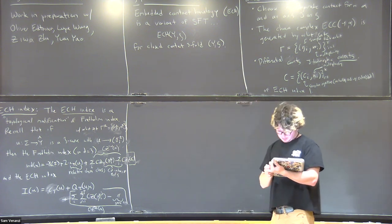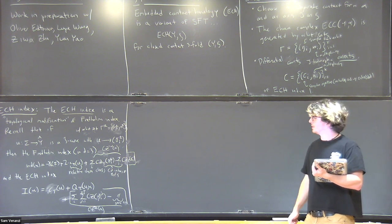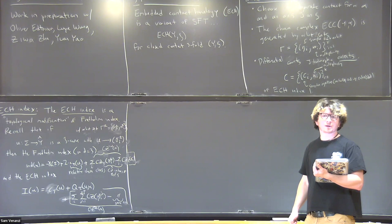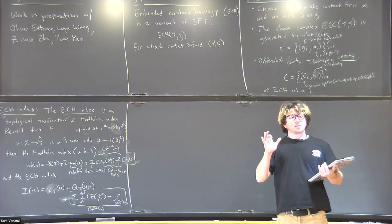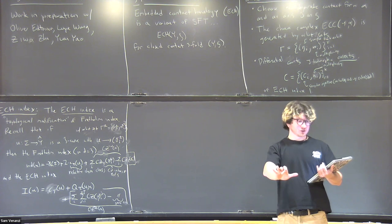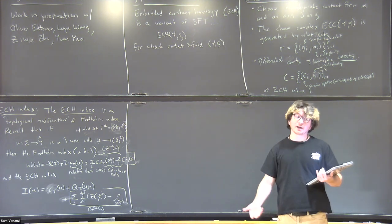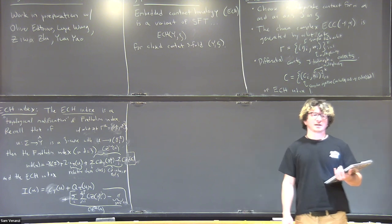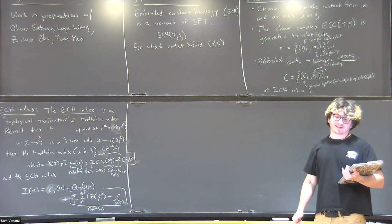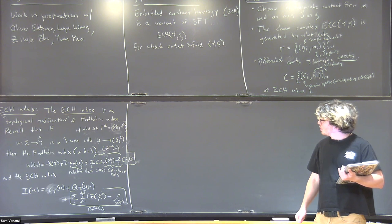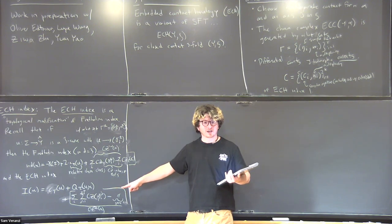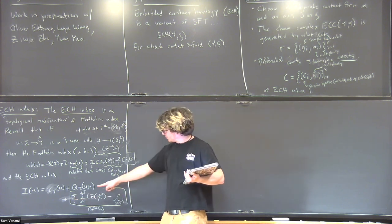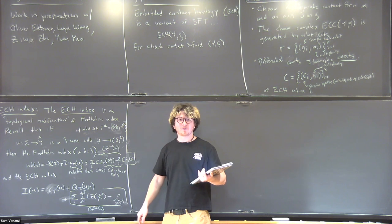For example, if you had two different surfaces mapped to the same image in M—say two different surfaces that were branched covers of the same degree of some initial simple curve—they would have the same ECH index but not necessarily the same Fredholm index. That's a cool thing the ECH index does. This formula was already understood in the Gromov-Taubes situation; this is like just the closed version of that.